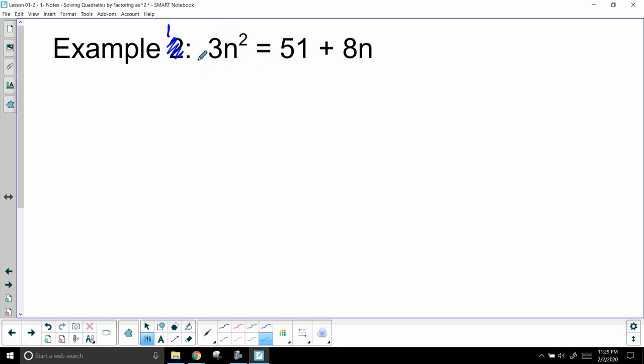Alright, again, we found out in class it does not matter if this is positive or negative, but I'm sticking with my good habits, so minus 51 minus 8n. What you do to one side you do the other. Those cancel, that equals 0. 3n squared minus 8n minus 51. So in this example we have a equals 3, b equals negative 8, c equals negative 51.